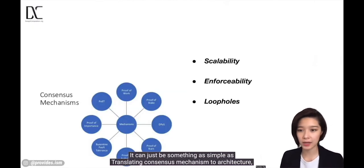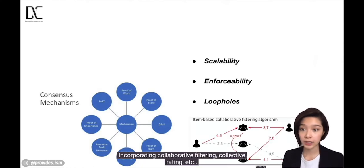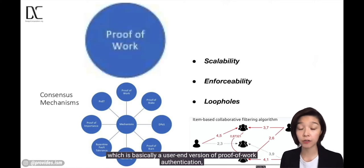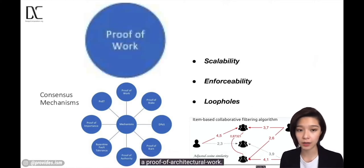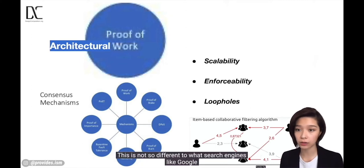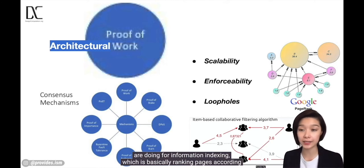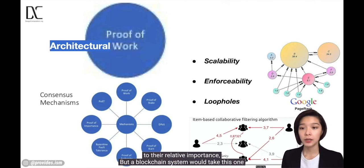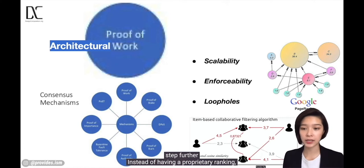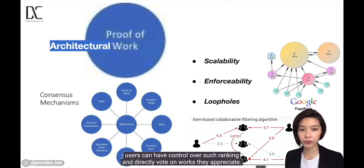There have to be ways in which enforceability is designed into the decentralized network structure itself — something as simple as translating consensus mechanisms to architecture, incorporating collaborative filtering, collective rating, etc., which is basically a user-end version of proof-of-work authentication: a proof-of-architectural work. This is not so different from what search engines like Google do for information indexing — ranking pages according to their relative importance. But a blockchain system would take this one step further, where users can have control over such rankings and directly vote on works they appreciate.